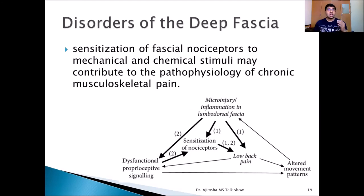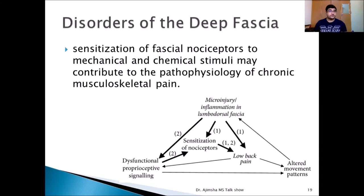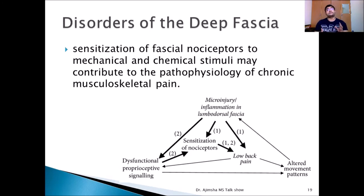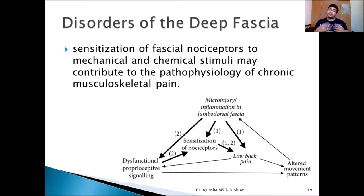Now the disorders of the deep fascia — there are many, but due to time we will mention a few. Sensitization of fascial nociceptors to mechanical and chemical stimuli may contribute to the pathophysiology of chronic musculoskeletal pain. In chronic low back pain, there is alteration in the histological structure of the fascia, and the degree of innervation is also changed — free nerve endings are replaced by nociceptive-adapted type nerve endings. Another study found ingrowth of nociceptive fibers and reaction to substance P, an inflammatory neurotransmitter, in patients with patellofemoral malalignment.